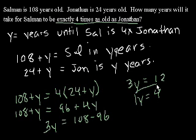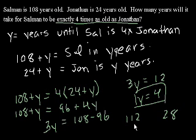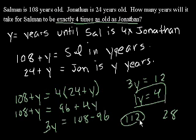So our algebra has told us that in four years, Salman is going to be exactly four times as old as Jonathan. Let's see if that's true. If Salman is 108 right now, in four years he's going to be 112. And if Jonathan is 24 right now, in four years he's going to be 28. And 28 times 4 is 80 plus 32 — yep, exactly — it'll be 112. So it looks like that problem worked. Excellent. Let's do another one.